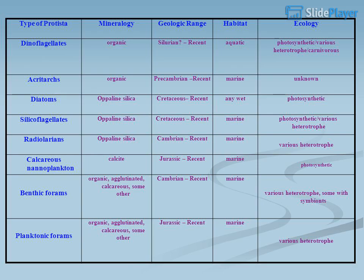Calcareous Nanoplankton. Ecology: Habitat, Geologic range, Mineralogy, Type of protista. Photosynthetic/various heterotrophy/carnivorous. Aquatic. Silurian to recent.